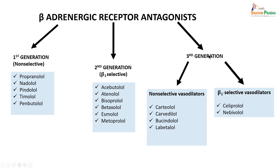Third generation beta blockers are non-selective vasodilators — like carteolol and carvedilol, which is called a vasodilatory beta blocker used in heart failure. Bucindolol and labetalol are dual inhibitors. Third generation beta-1 selective vasodilators include celiprolol, which has beta-1 blocking properties and agonistic effect on beta-2 receptors — making it suitable for a person having bronchial asthma with hypertension. Another drug is nebivolol.